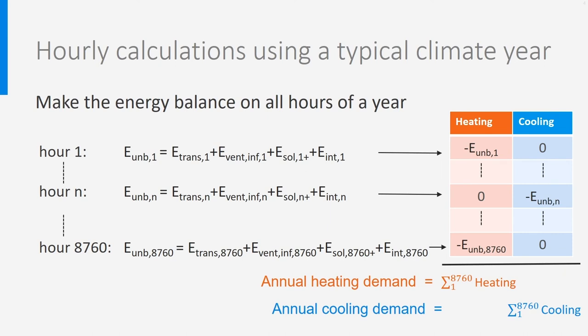Let's now take a closer look at the hourly calculations over one year. Let's start with hour 1 and make the energy balance. If the unbalance is negative, there will be heating needed during this hour; if the unbalance is positive, there will be cooling. We do the same for hour 2 and go further to hour n, and finally to hour 8760. We now know for each hour if there is heating or cooling. The only thing we need to do to get the yearly heating demand is to add all hourly heating demands, and for the annual cooling demand, we add all hourly cooling demands.